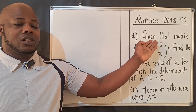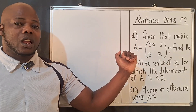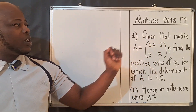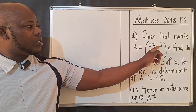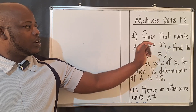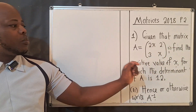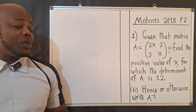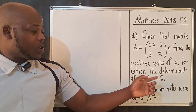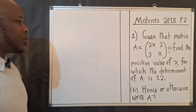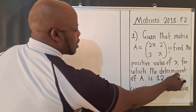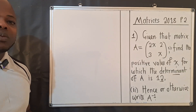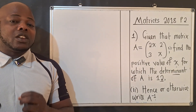This is a matrices question — it was question 1a. The question reads: given that matrix A is equal to [2x, 2; 3, x], find the positive value of x for which the determinant of A is equal to 12.